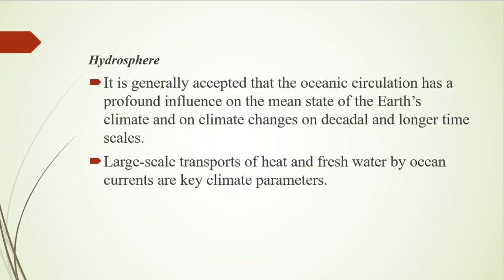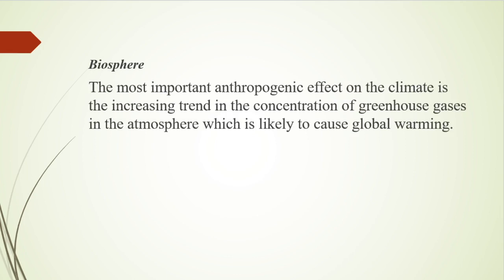Next is the Hydrosphere: it is generally accepted that oceanic circulation has a profound influence on the mean state of the earth's climate and on climate changes on decadal and longer time scales. Long-scale transports of heat and fresh water by ocean currents are key climate parameters. The circulation is determined by the structure and strength of the wind systems. The world ocean plays a two-fold role in the earth's climate system.